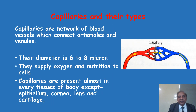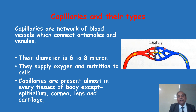Let us see first what are the capillaries. Capillaries are the network of blood vessels which connect an arteriole and the venules. An arteriole is the terminal part of the arterial system. When the artery becomes the smallest part — around 20 millimicron — it breaks up into a network of blood vessels called capillaries. Capillaries are present almost everywhere in the body except at a few places.